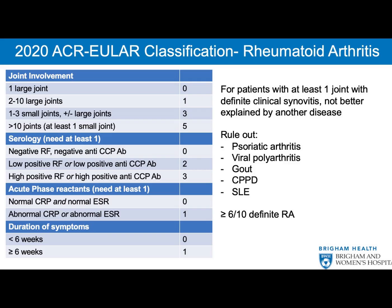Category 2 — Laboratory Test Results (0 to 3 points): Rheumatoid factor (RF) and anticyclic citrullinated peptide (anti-CCP) antibodies are assessed. Negative results score 0 points. Weakly positive results — above normal but less than three times the normal limit — score 2 points. Strongly positive results — above three times the normal limit — score 3 points.